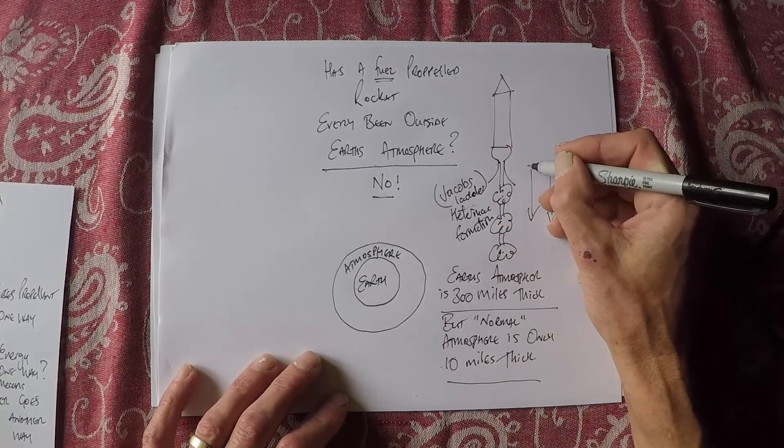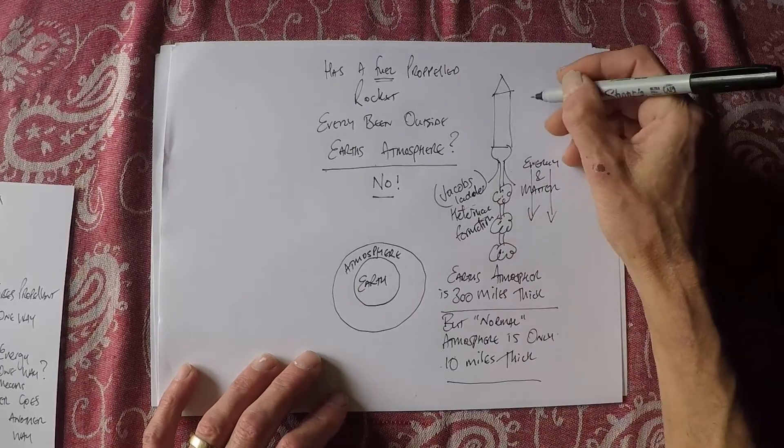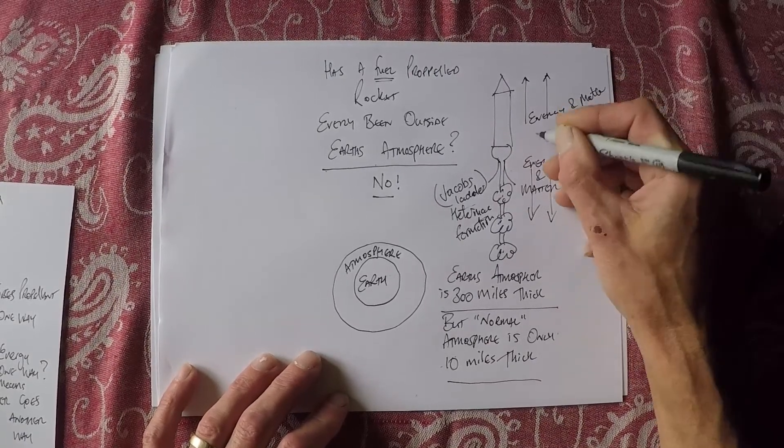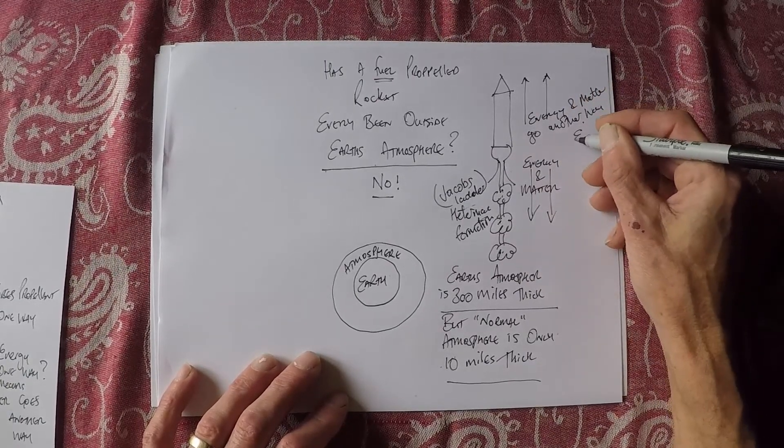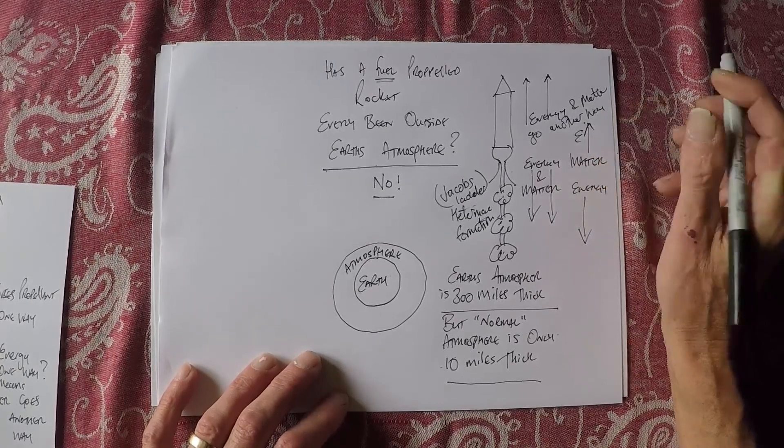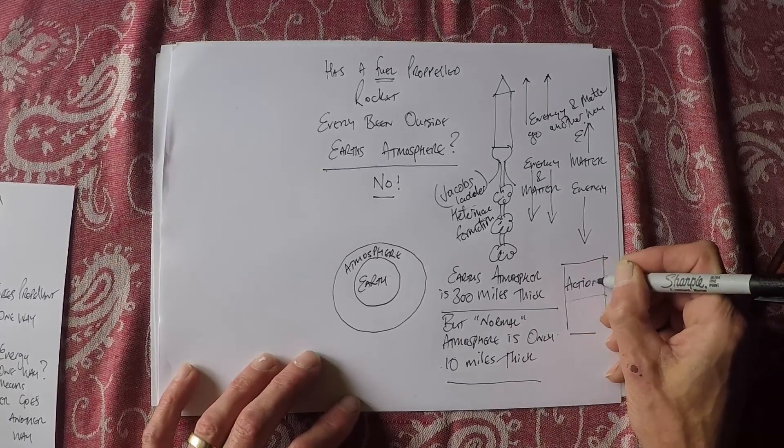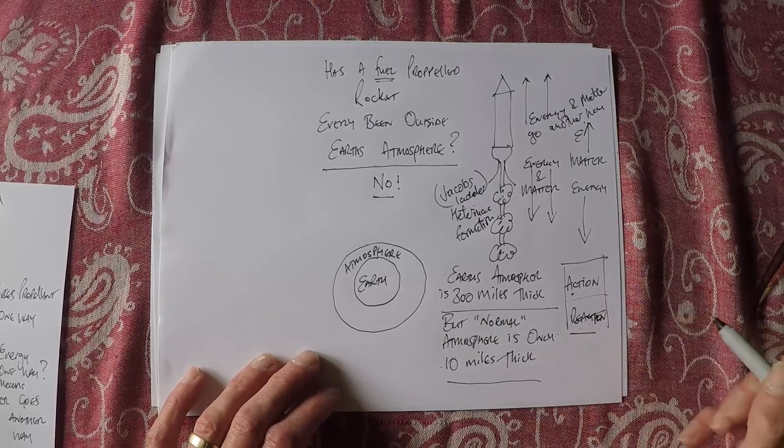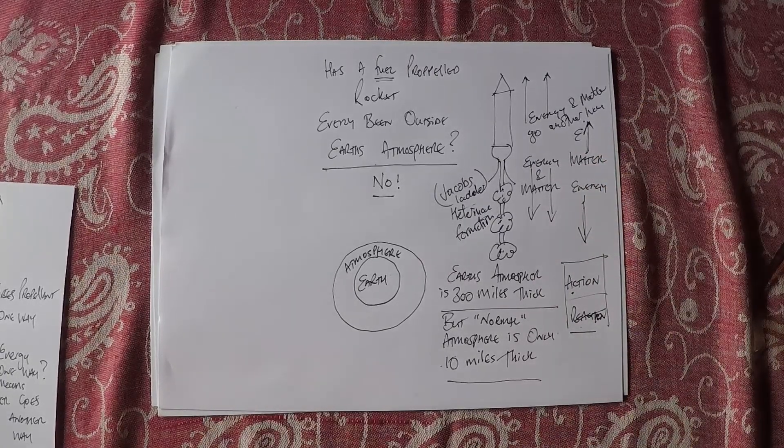Okay, so energy and matter go one way, but energy and matter go another way. Now I can sit here and say energy went that way and matter went that way, and why? Because the only true science thing ever said is action reaction. There is never an action without a reaction. So energy down normally means matter up and I've shown this in my videos. If energy is going one way, matter is going another.